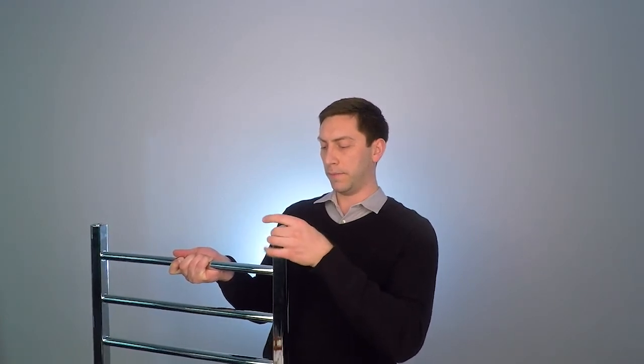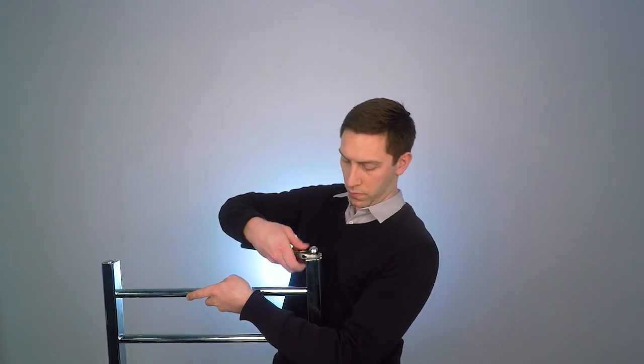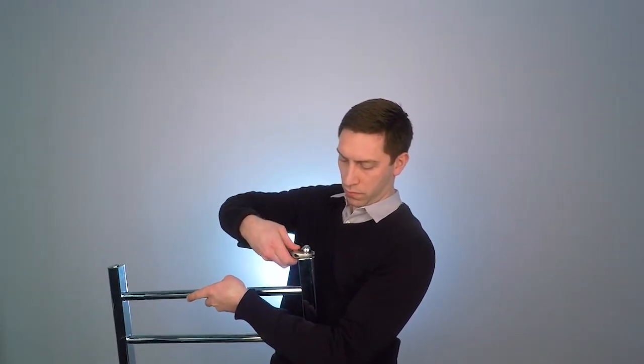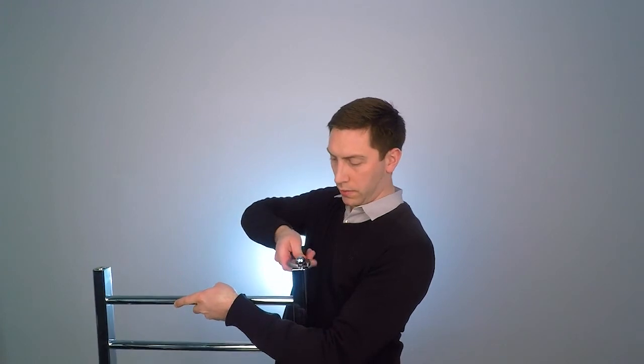Once you've got those removed, the ball finial, this little piece right here, will simply screw in its place. So just screw that in and tighten it with an adjustable wrench. And there you go, you have your nice decorative ball finial installed.